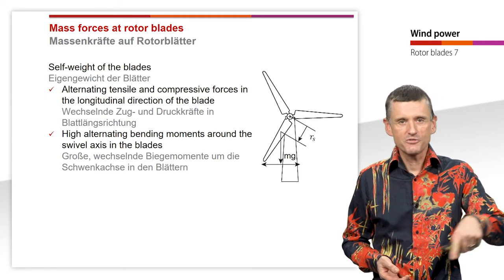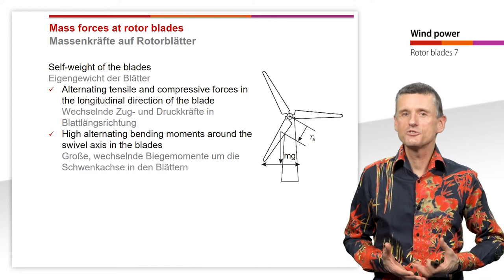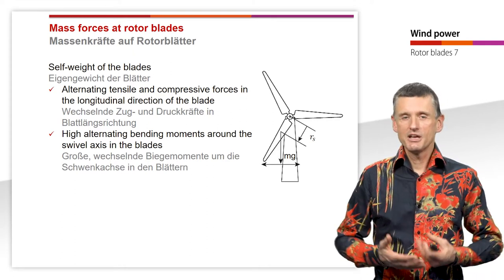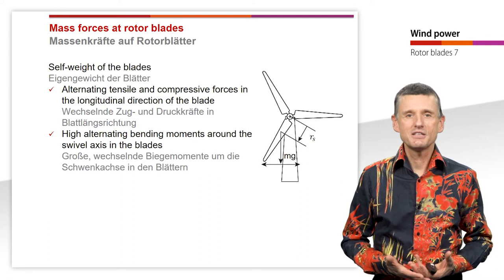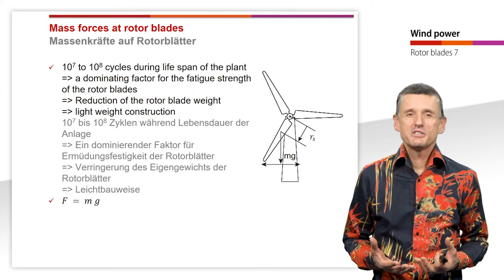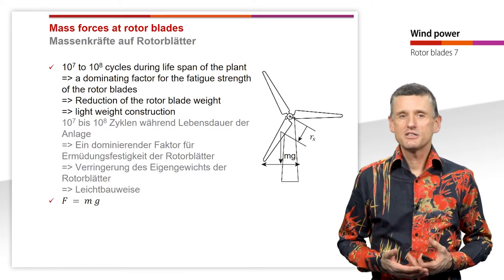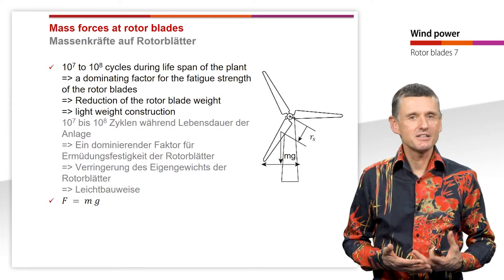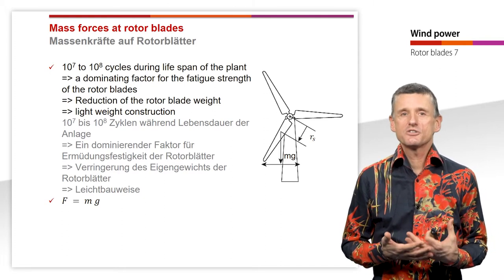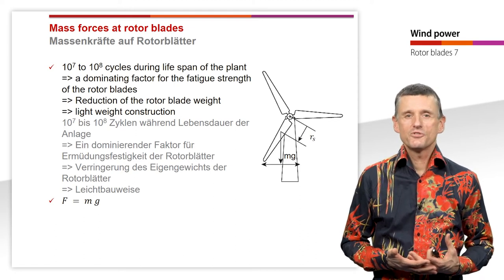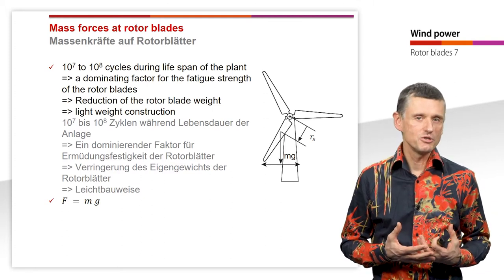When we consider the rotation of the rotor blades, we have alternating tensile and compressive forces in the longitudinal direction of the blade. When the blade is in a certain direction, we have high alternating bending moments around the swivel axis of the blades. Considering a lifetime of 20 years or more, we get 10^7 to 10^8 cycles over the lifespan of the plant — a really high fatigue demand on the rotor blades. Therefore, a lot is done to reduce rotor blade weight, and construction moves towards lightweight design.